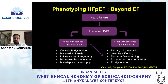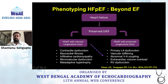In HFpEF, if LV EF is preserved, look at the strains. If there is a reduced GLS despite preserved LV EF, this is associated with infiltrative cardiomyopathy, contractile dysfunction, and evidence of myocardial fibrosis. However, if HFpEF is present but LV GLS is also preserved, one must look beyond the LV — primarily at left atrial dysfunction, abnormal ventriculoarterial coupling, isolated RV dysfunction, or extracardiac volume overload.